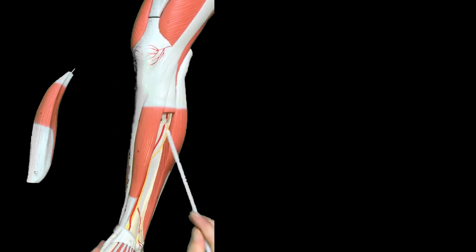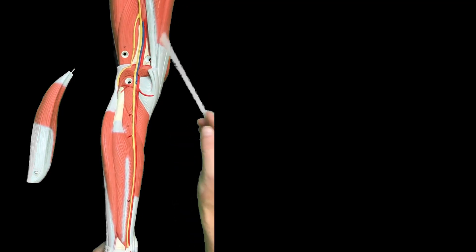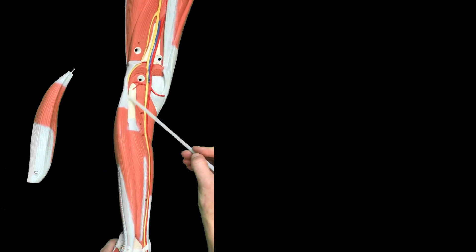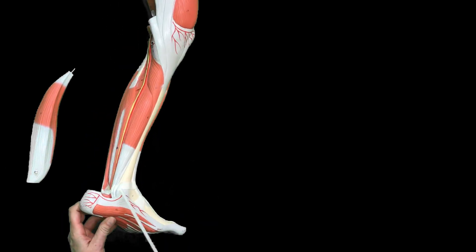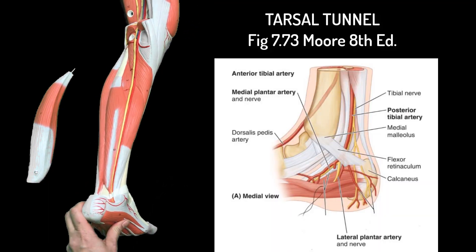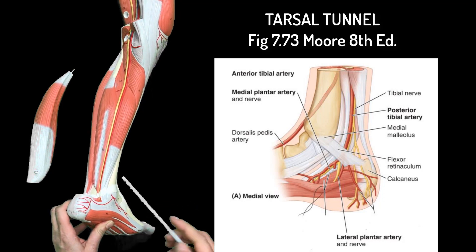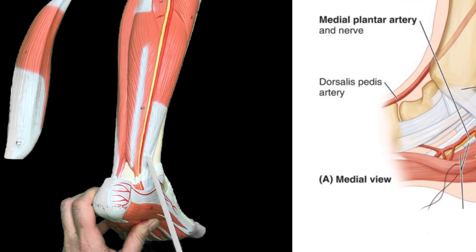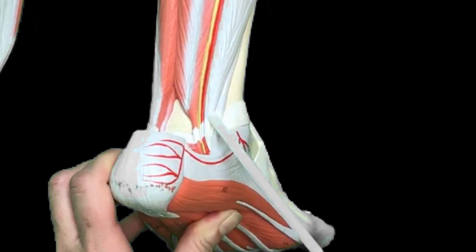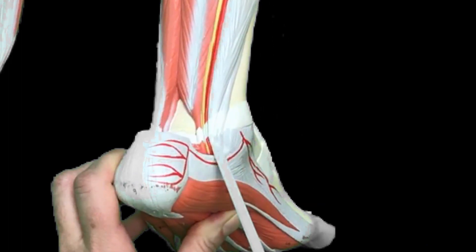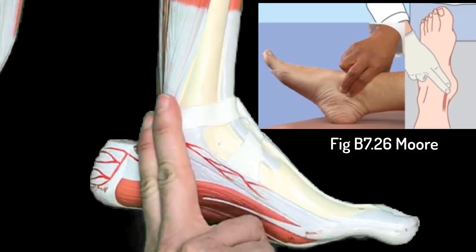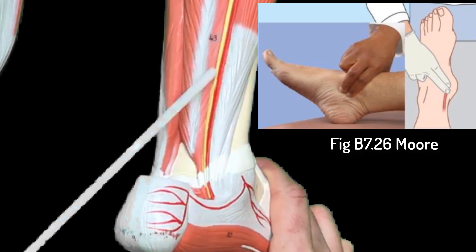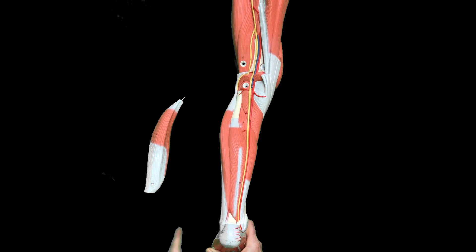We call it the popliteal artery until the anterior tibial artery branches off, then we call it the tibial peroneal trunk, which then bifurcates into the peroneal artery and the posterior tibial artery. The posterior tibial artery passes into the tarsal tunnel. To revise: you have the medial malleolus, then the mnemonic 'Tom, Dick, and Very Naughty Harry' — the 'A' stands for artery — so you have tibialis posterior, flexor digitorum, then the posterior tibial artery (where you can feel a pulse), accompanied by the posterior tibial nerve.